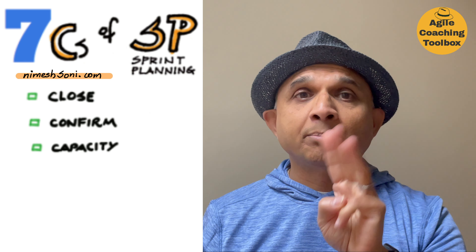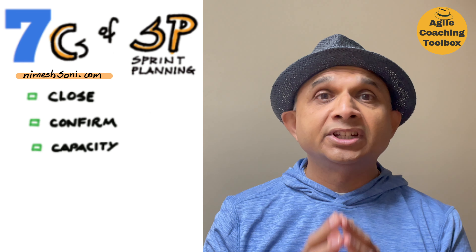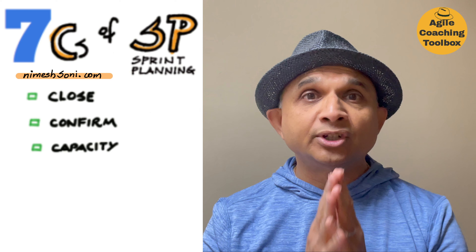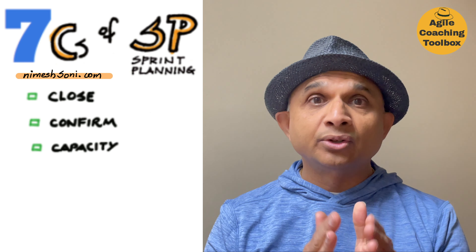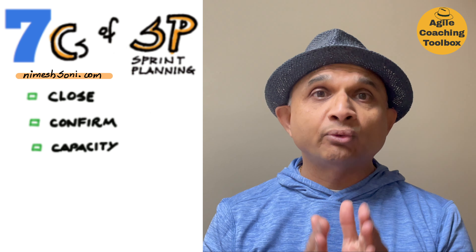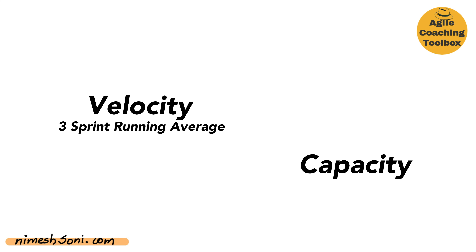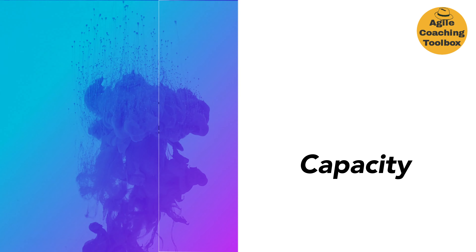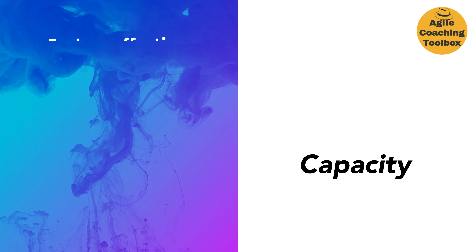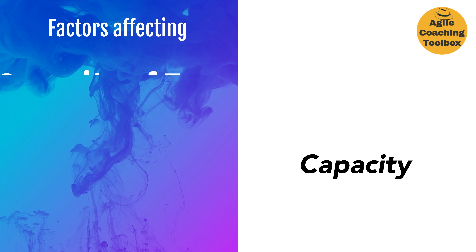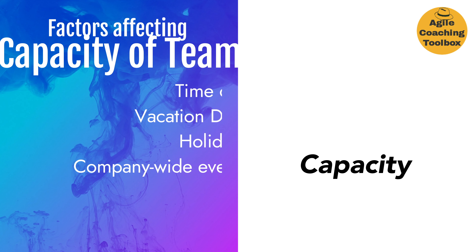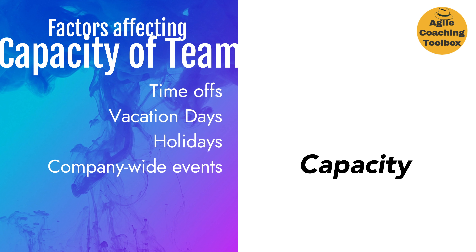Number three is capacity — referring to the capacity of the team. How many stories can you take into the sprint? How many stories should we load into the sprint backlog? To answer this question, you will need to know the velocity of the team and the capacity of the team for this sprint. In order to find out the capacity of your team for this coming sprint, you have to ask them. You have to find out details about their day offs, holidays, planned vacations, any company-wide events — anything and everything that will take time away from the team and have a direct impact on your team's capacity.